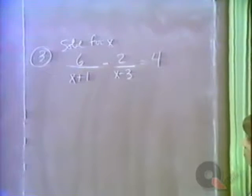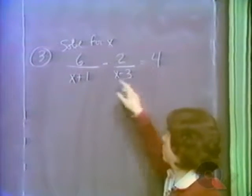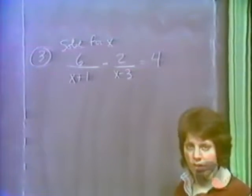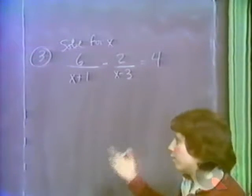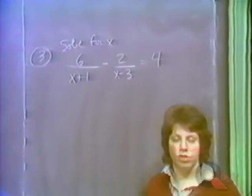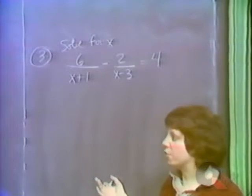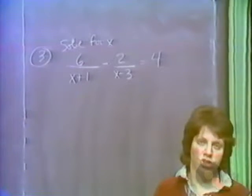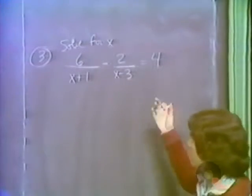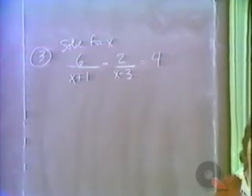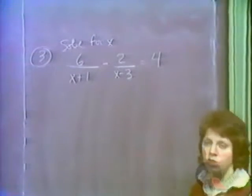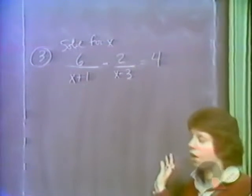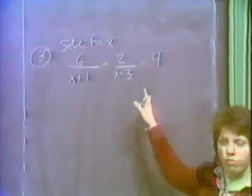When you handle a fractional equation, particularly one that has variables in the denominator, the check becomes very important. In the other examples, checking was nice but not essential. On a fractional equation with variables in the denominator, it is much more important to check, because it is possible that while solving we introduced a root that really is not a root to the original equation — since we solved the version without fractions.